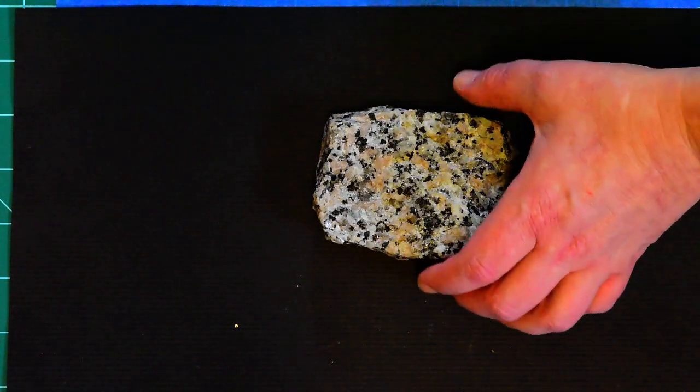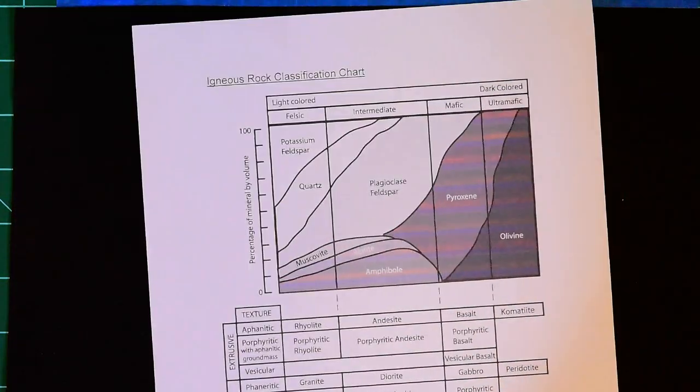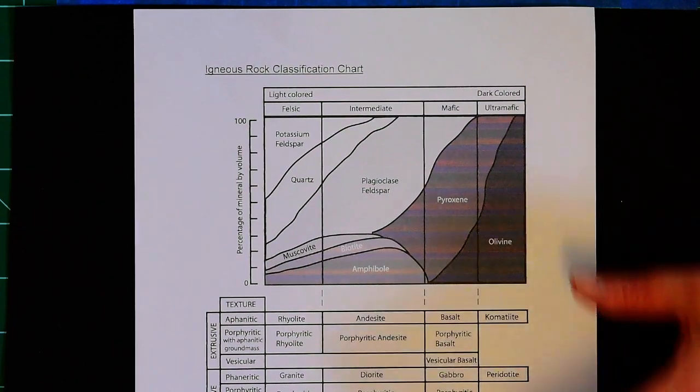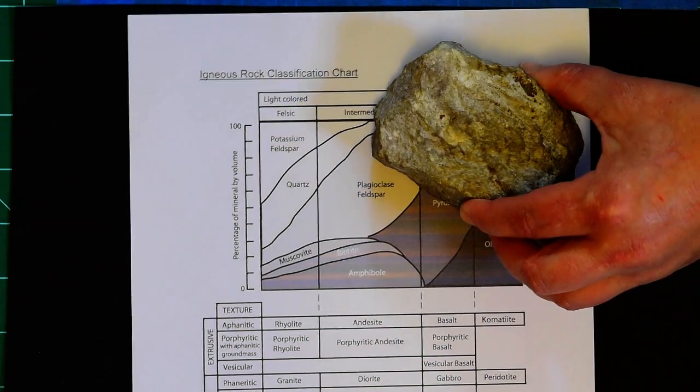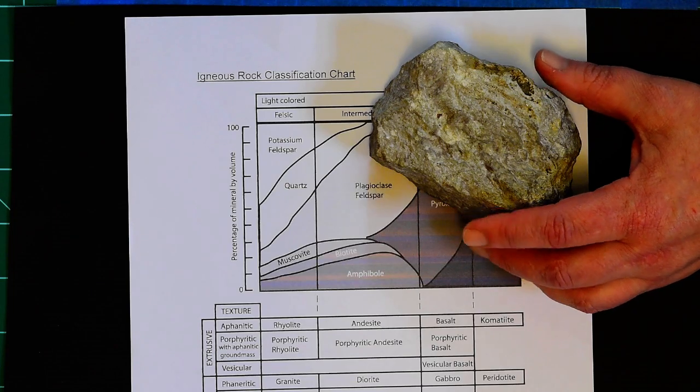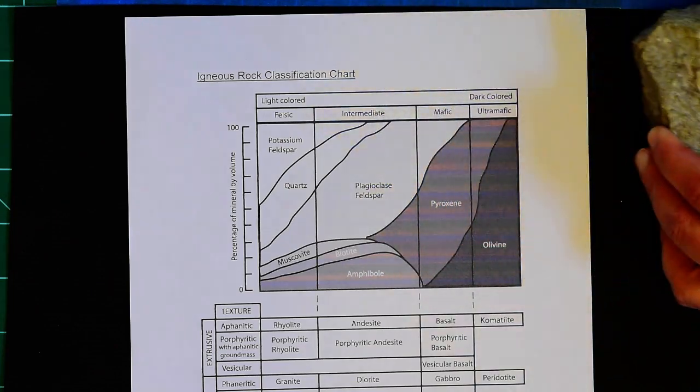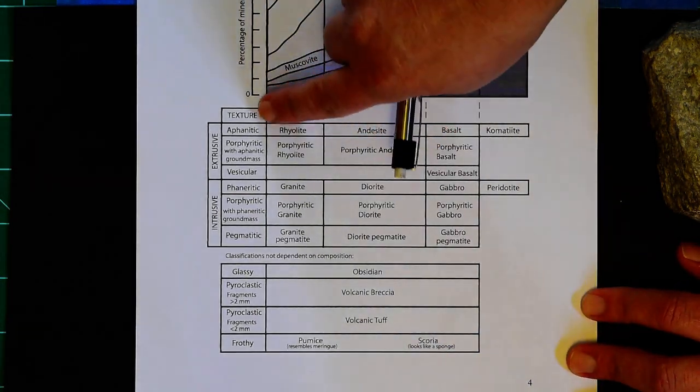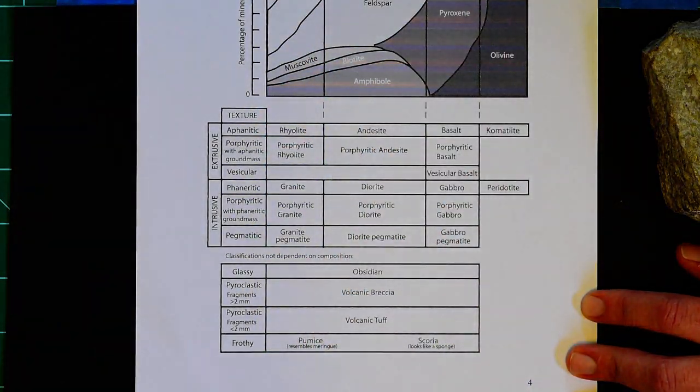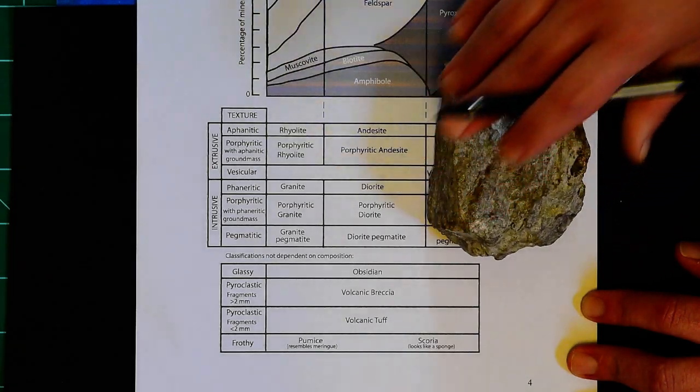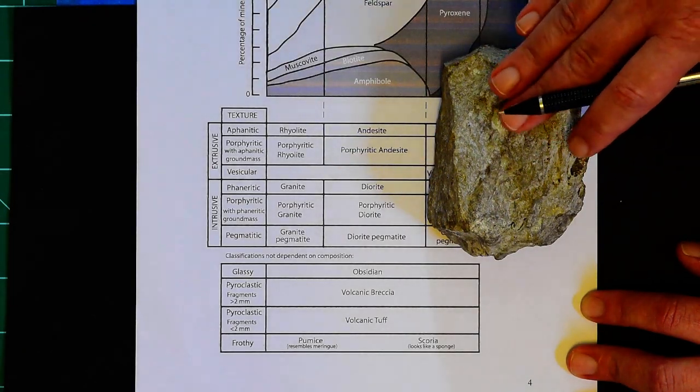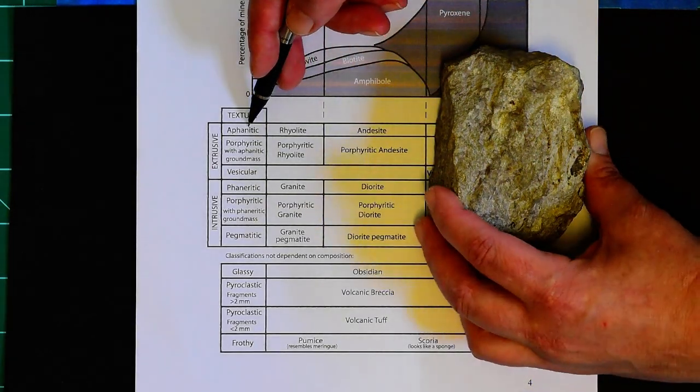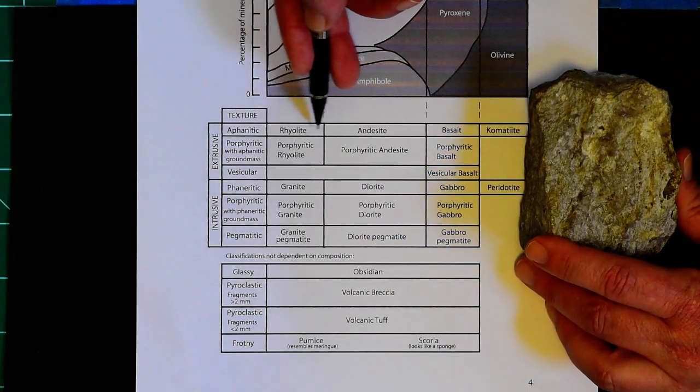So let's see how we are going to use our chart here to identify, for example, this igneous rock. Well, the first thing you do when you are identifying the igneous rock is decide what texture it has. And I already said that this particular igneous rock is aphanitic, and so we know it's going to be in this aphanitic row.